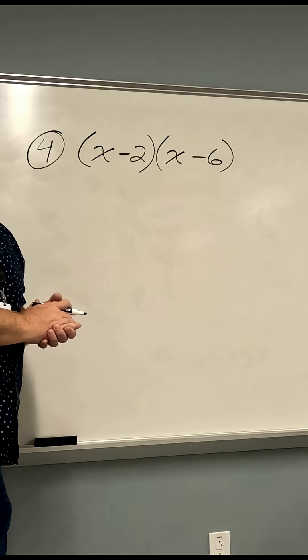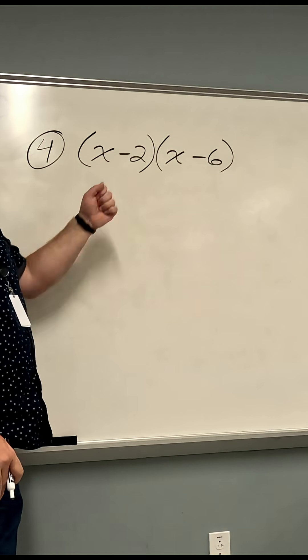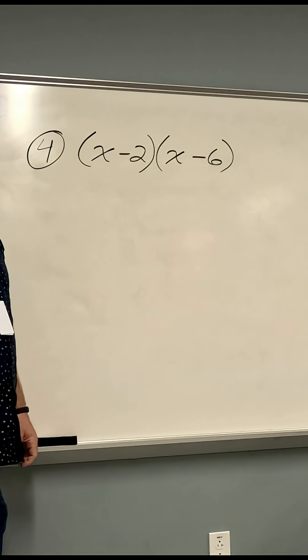All right, in this last problem here, we're going to multiply x minus 2, the quantity x minus 2, times the quantity x minus 6.